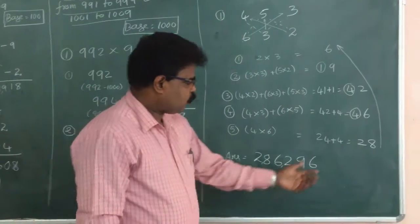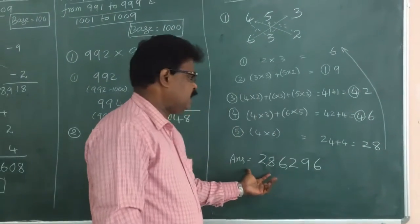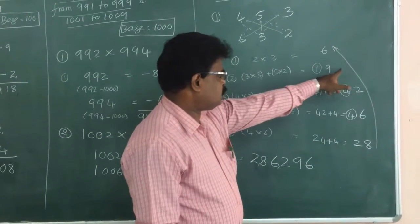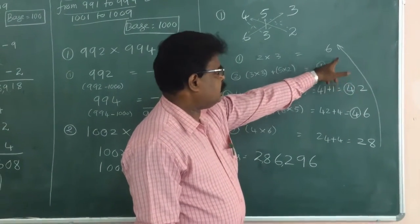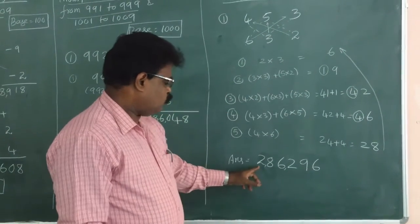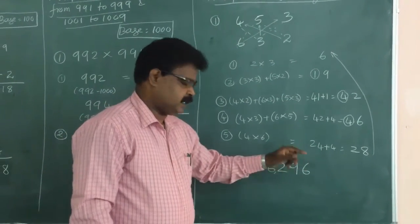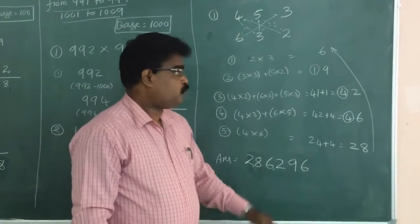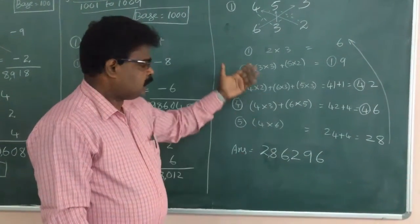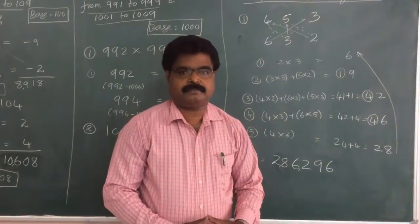Write 28 on the left-hand side, then 6, then 2, then 9, then 6. The final answer is 286,296. If you practice this, you can solve 3-digit number multiplications very easily.